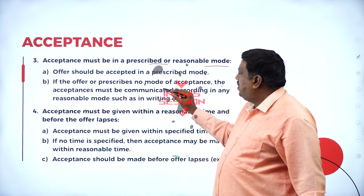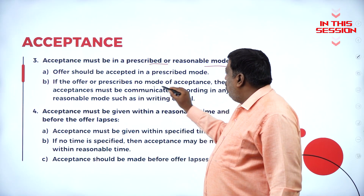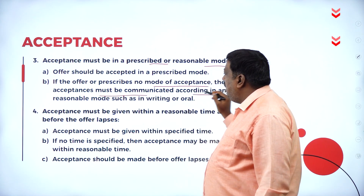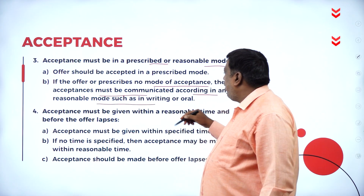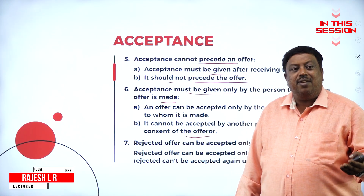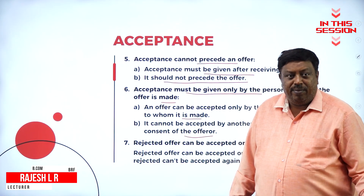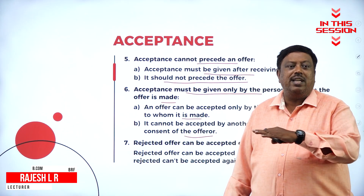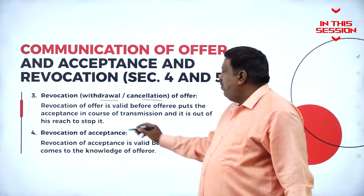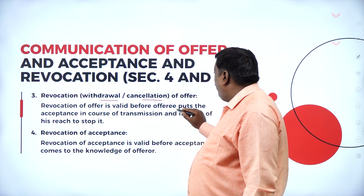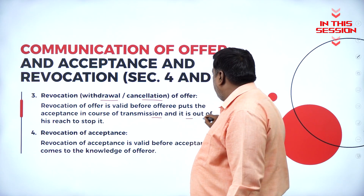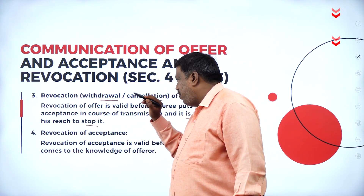If the offeror prescribes no mode of acceptance, acceptance must be communicated in any reasonable mode such as in writing or oral. When the offer is rejected, if the offer is renewed, then only it can be accepted, or else it cannot be accepted. Revocation of offer is valid before the offeree puts the acceptance in course of transmission and it is out of reach to stop it.